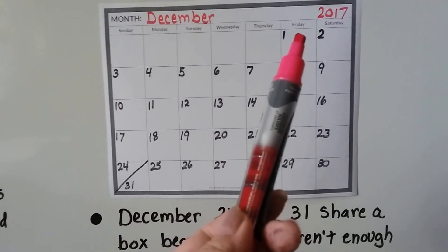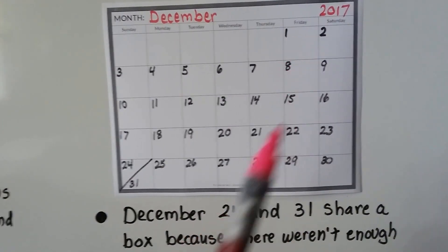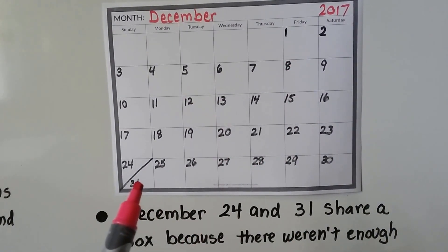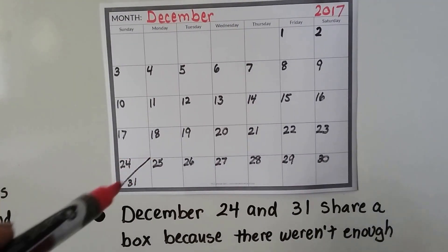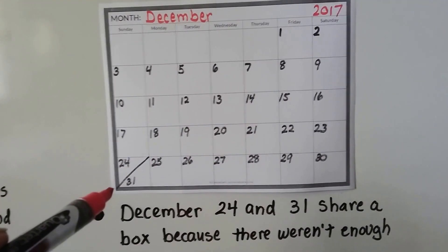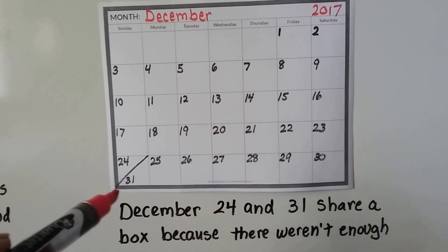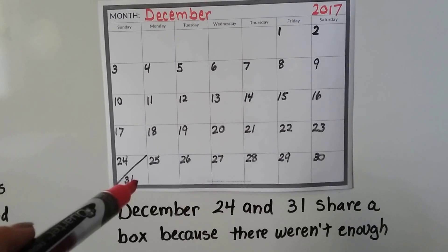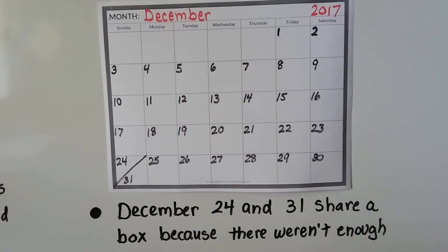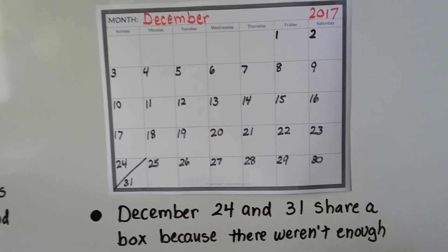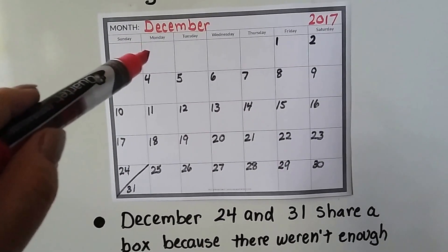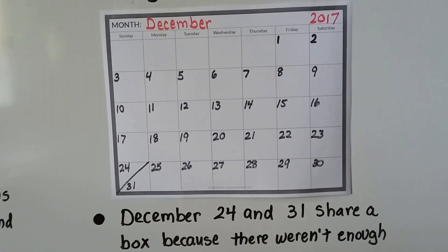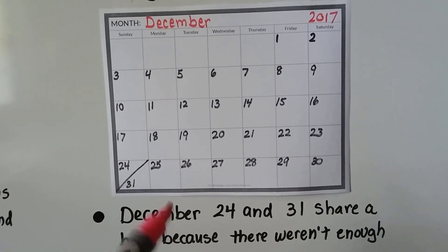The 1st started way over here. So it needed another box for 31, and sometimes you'll see a calendar will have a slash mark like this — a line — and they'll put the extra days here. If December 1st was over here, we wouldn't have run out of boxes.